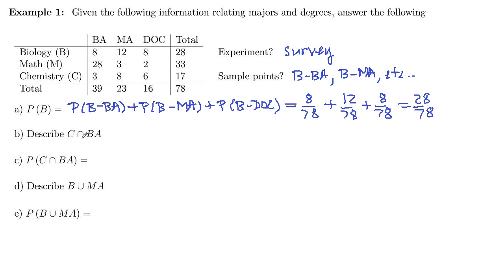Describe C intersect BA. So C is chemistry majors, that's these people here. We intersect them with bachelor's degrees. The overlap is that three right there. So those are the people that got bachelor's degrees and they were chemistry majors, or vice versa. These are chemistry majors with a BA degree.